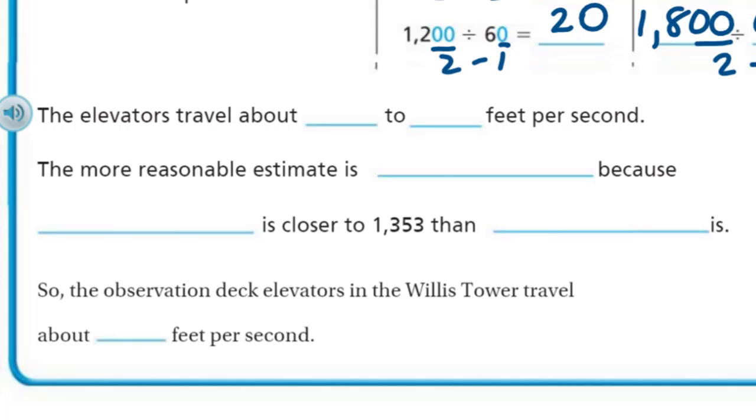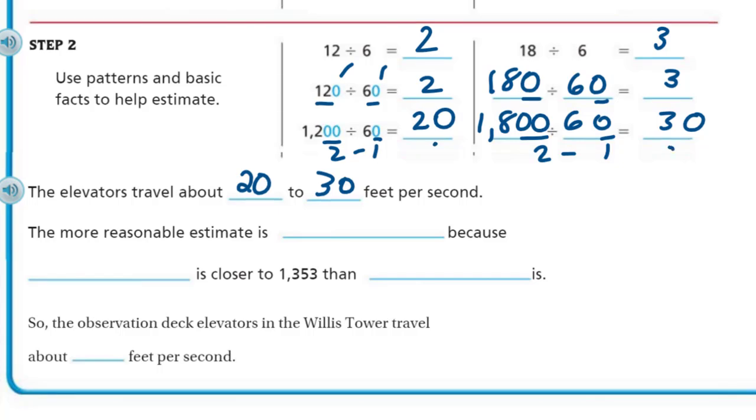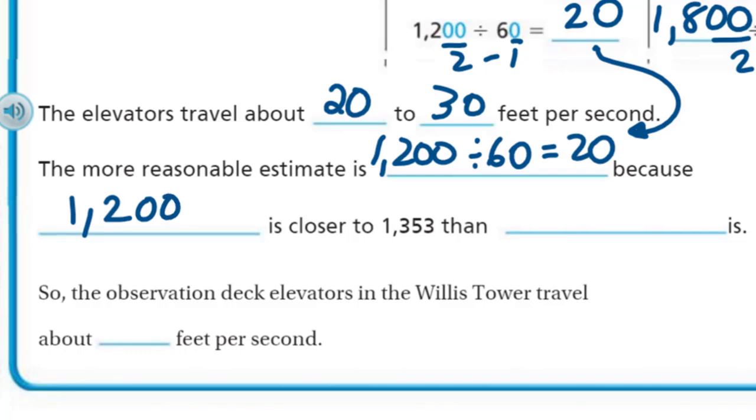Since the elevators travel about, now we have that range. We have one range which is about 20 to 30 feet per second. Because here's our estimate right here. Here's our 20. Here's our 30. Now, the more reasonable estimate is blank because blank is closer to 1,353 than blank is. I love this. So, I think the more reasonable estimate that we created here is going to be that 1,200 that we had. So, 1,200 divided by 60 equals 20. That was the whole equation. This one right here. We're going to take our blue dot. And so, it's because, basically because 1,200 is closer to 1,353 than, remember the other one we had? 1,800. It's much closer to that amount.